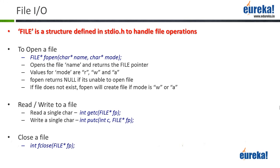When you work with files, there are three basic operations you need to perform. First, you need to open the file. Then you can perform any kind of operation you want - that is read or write, etc. And then finally, once you're done, you need to close the file. To keep track of what you've done with the file - like the last byte written or last location read - you need a special data type called FILE, all in capitals. It's a special structure already defined in stdio.h.